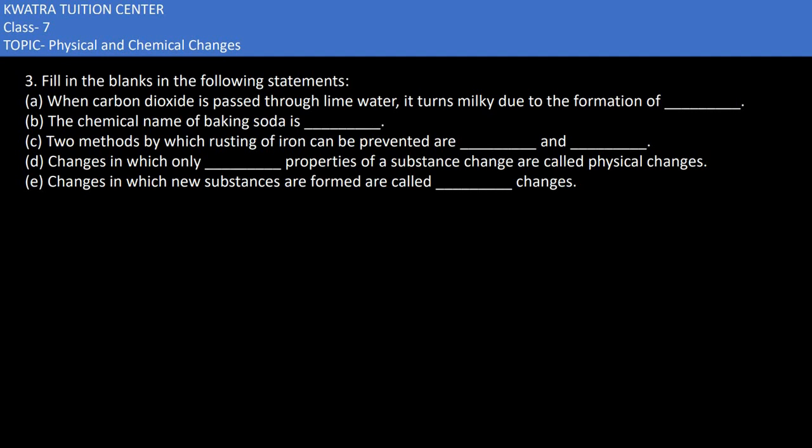In this case it says fill in the blanks in the following statement. When carbon dioxide is passed through lime water, it turns milky due to the formation of calcium carbonate. What happens is that calcium carbonate becomes a milky substance. Keep in mind that if you add CO2 in lime water, then calcium carbonate would be formed.